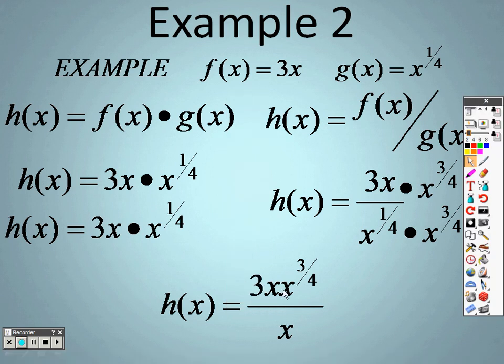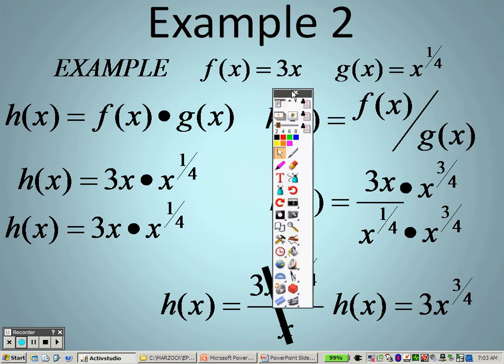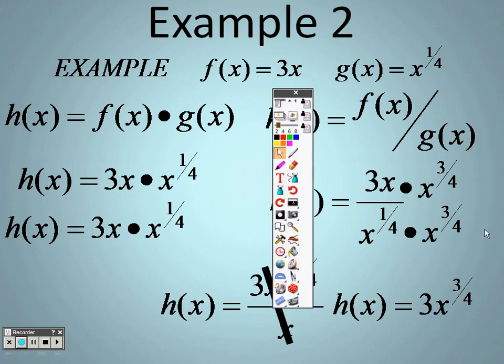And I have the x to the 3 fourths on top. These two items, there's an x on the top and the bottom, so those two cancel out, leaving me with just 3 times x to the 3 fourths.